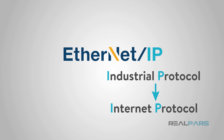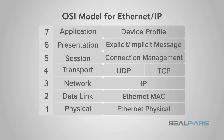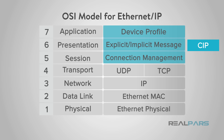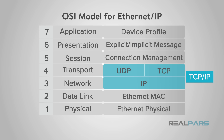Confused yet? The IP part of this protocol is simply the use of the Ethernet infrastructure in conjunction with the Industrial Protocol, which uses Common Industrial Protocol, or CIP, layers that combine with TCP/IP or User Datagram Protocol, or UDP, layers to create a protocol that can be used to support data exchange and control applications.